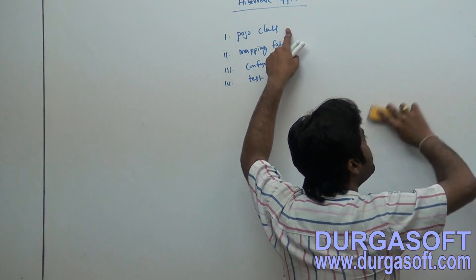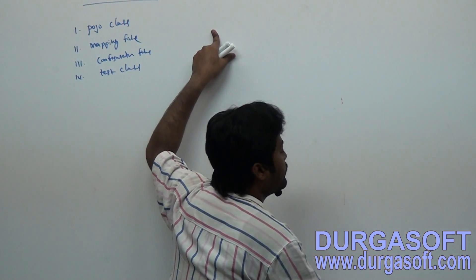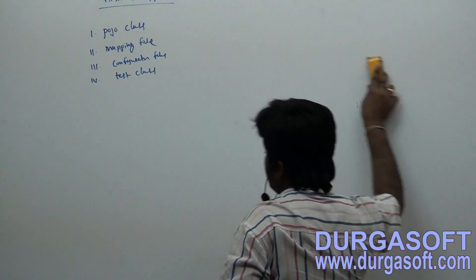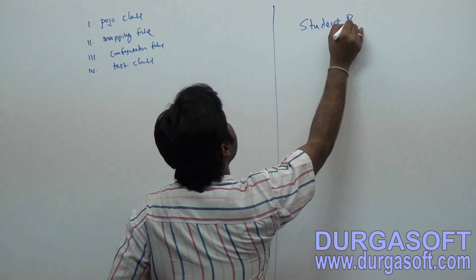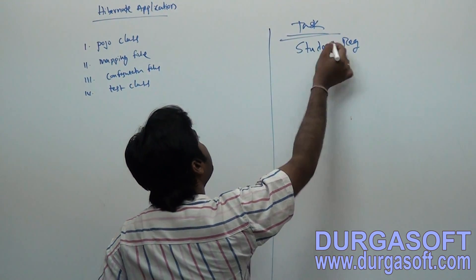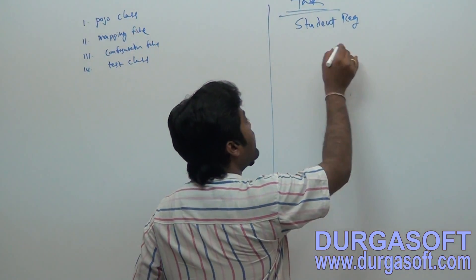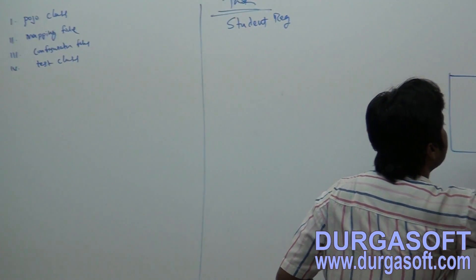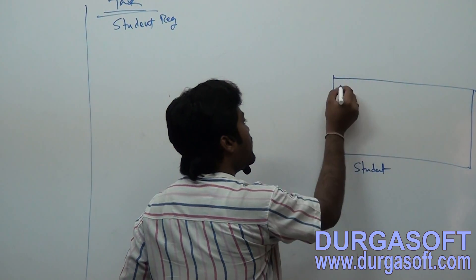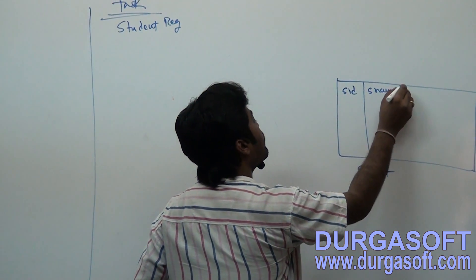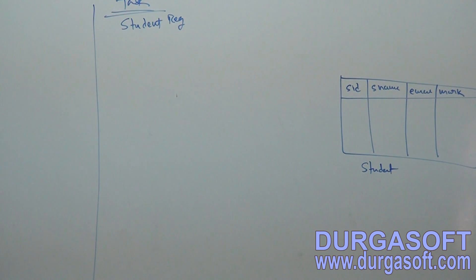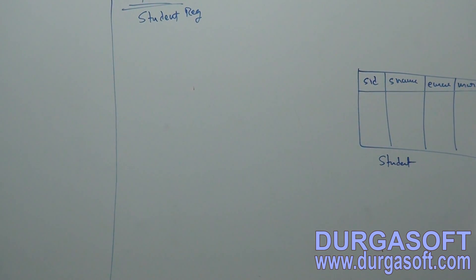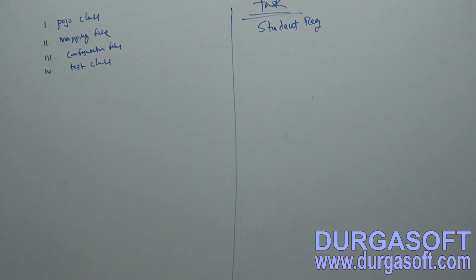POJO means Plain Old Java Object. We need to write a POJO class, but which properties do we need to maintain in it? My use case is student registration. My task is to store data into a student table with fields: student ID, student name, email, and marks. Using Hibernate, to store this data, you require a POJO class, then a mapping file, then a configuration file, and finally a tester class.